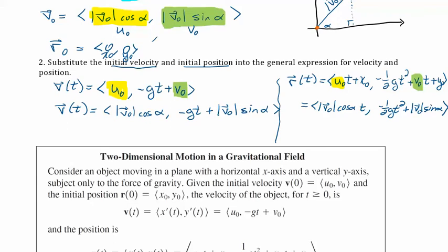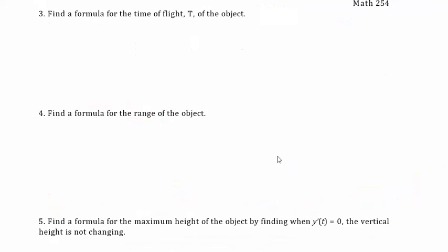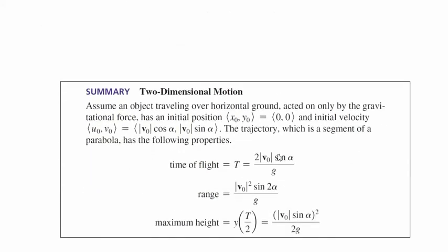Put a star and box around those formulas — we'll need them to derive other results. This is our position function r(t). Previously we looked at problems finding time of flight and range, and that's what we want to do next with these parameters. Assume an object traveling over horizontal ground acted on only by gravity, with initial position (0, 0) and initial velocity components: magnitude·cosine(alpha) and magnitude·sine(alpha).